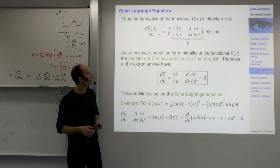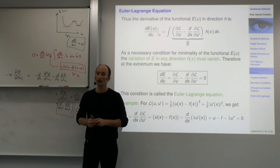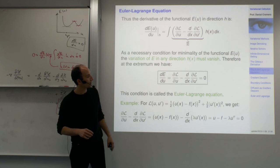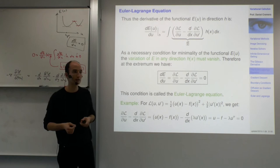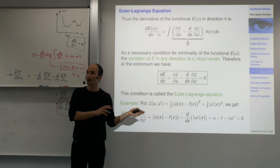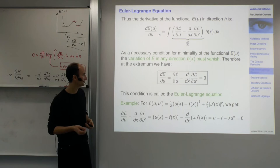The Euler-Lagrange equation means one way to solve variational methods is to set up this equation, compute it for your specific functional, and solve it. Solving differential equations is not easy in general, but here we are well off because it's a linear equation — because the functional was quadratic. Much like in the discrete setting, if you choose a quadratic cost function, life is easier.